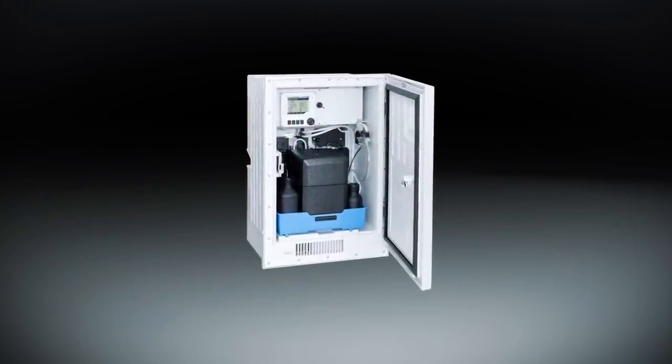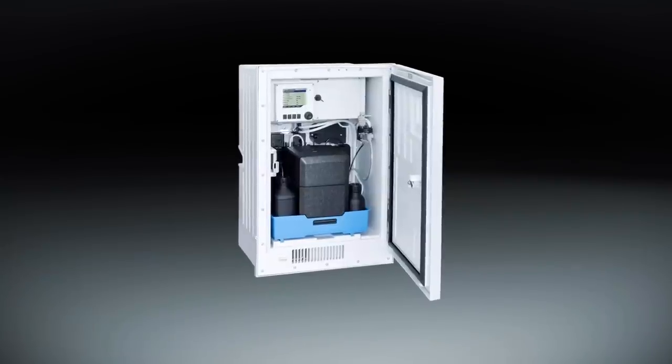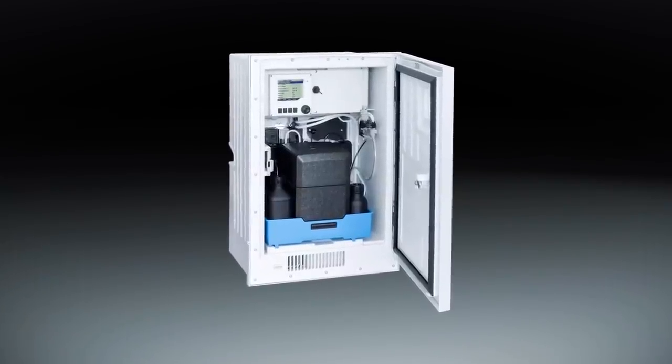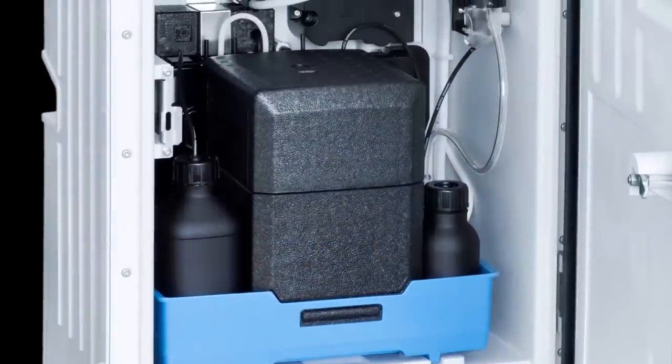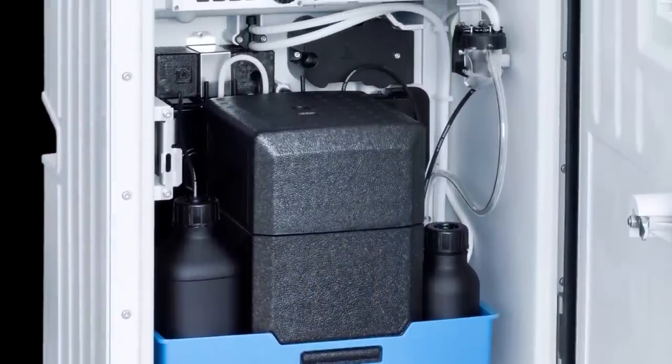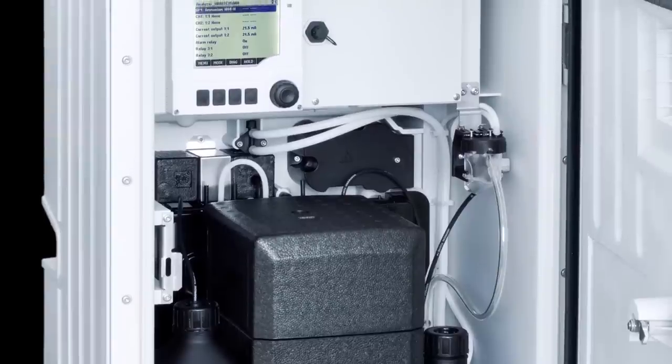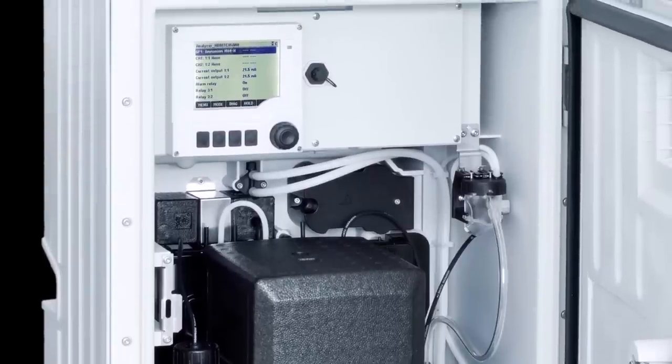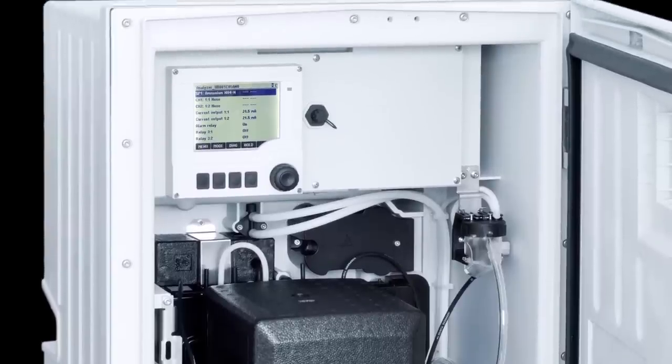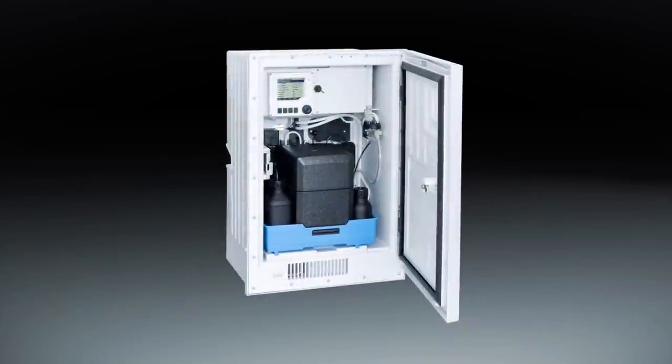Automatic colorimetric analysis is performed by compact systems, such as Endress+Hauser's Liquiline System CA80. Such systems consist of various components for sampling, sample treatment, and the colorimetric analysis of the sample, and enable reliable analysis of a wide variety of parameters.